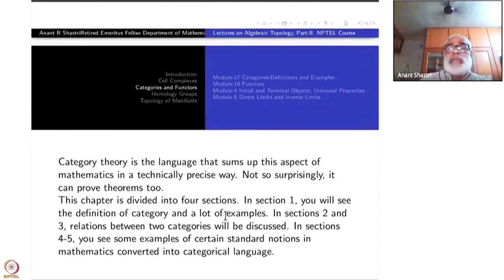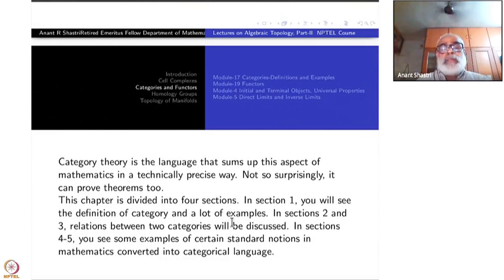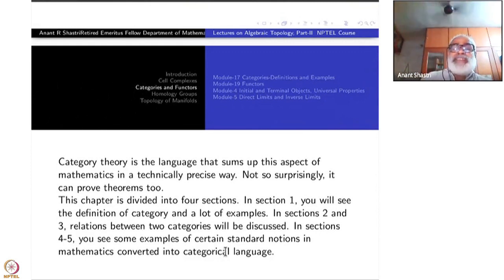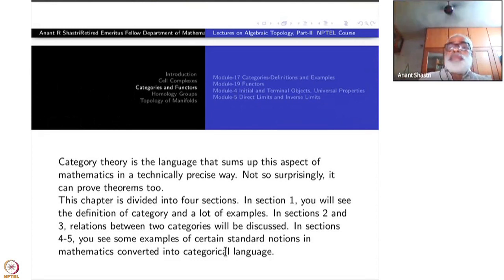This chapter is divided into roughly four sections. The first section covers the definition of a category and sufficiently many examples. The second and third study relations between categories under the name of functors. Sections four and five show more examples of standard notions which can be expressed in the categorical language.